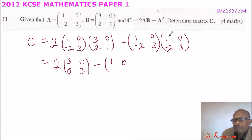-2 multiplied by 1 is -2, 3 multiplied by -2 is -6, so -2 minus 6 is -8. Then finally here we have -2 times 0 is 0, 3 times 3 is 9, 0 plus 9 is 9.